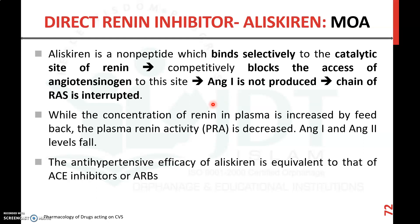Direct renin inhibitors inhibit the conversion of angiotensinogen to angiotensin 1 by renin. While the concentration of renin in plasma is increased by feedback, plasma renin activity is decreased. Angiotensin 1 and angiotensin 2 levels fall due to prevention of conversion of angiotensinogen to angiotensin 1. The efficacy of the antihypertensive action of aliskiren is equivalent to that of ACE inhibitors like ramipril and ARBs like losartan.